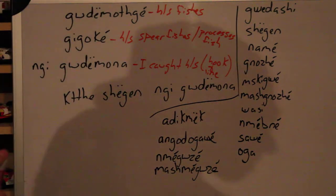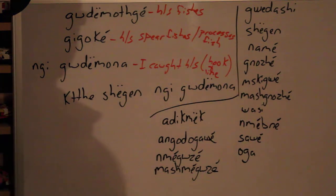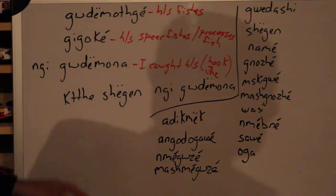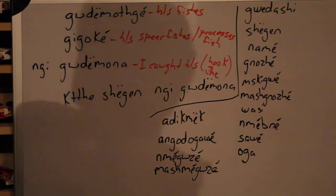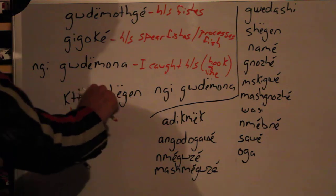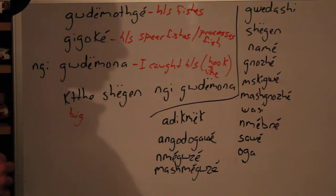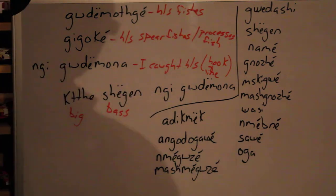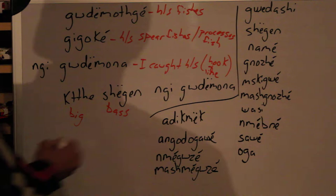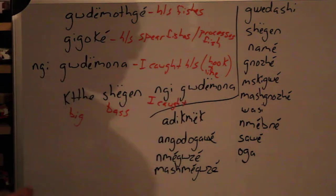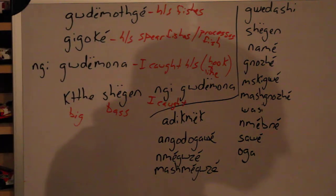So I caught something — I caught something, because it's an animal. An example of using that in a sentence: [word for big], [word for bass]. Engi goudemojgé, engi goudemojgé.